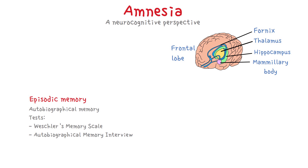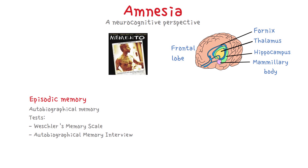Unlike in movies like Memento or the Bond series, amnesia isn't clearly retrograde or anterograde in clinical situations. Memento is a Christopher Nolan movie where the main character Leonard suffers from pure anterograde memory loss — he remembers everything before his brain injury, but makes notes, takes pictures, and gets tattoos to remember what has been happening since his brain injury. It's a great movie, really worth a watch.